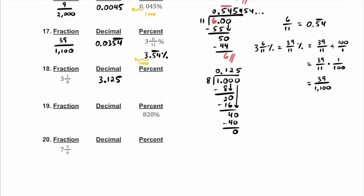Now to turn this decimal into a percent, we multiply by 100 — slide that decimal twice to the right. If we do that, as a percent this is going to be 312.5%. So if we have a mixed number, this 3 kind of stays consistent all the way across.